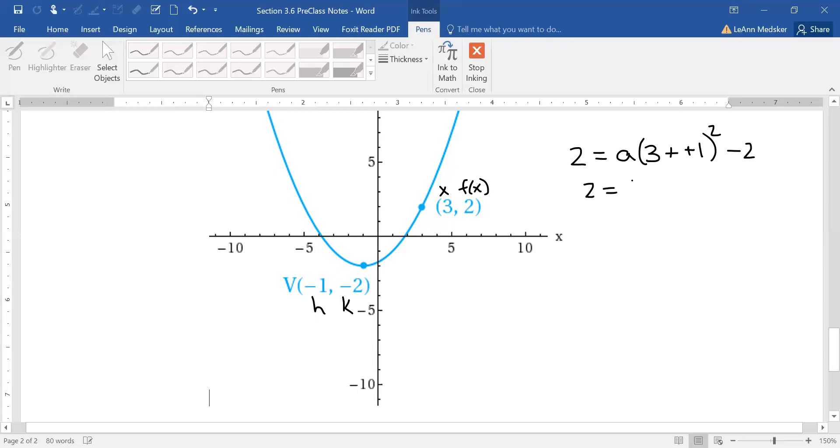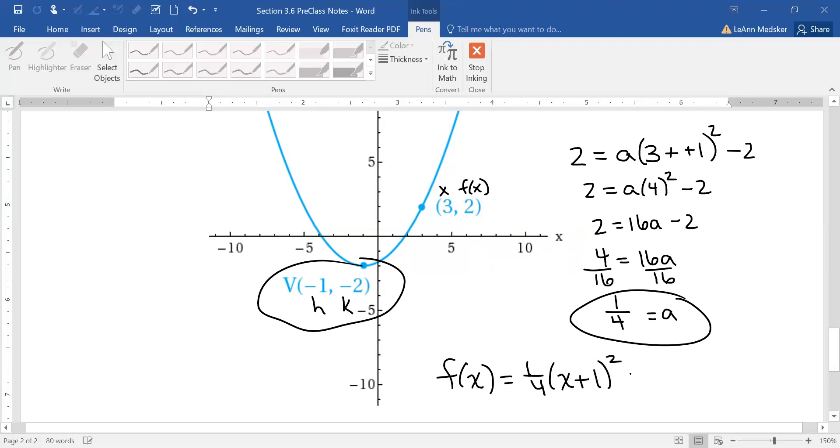So this is 2 equals a times (4)² minus 2, which is 16a - 2. Add the 2 over, we get 4, and divide by 16. Make sure you divide by the number connected to a. So this reduces to one-fourth. So I have my h and my k, I have my a, so I have my final equation. So this is (1/4)(x + 1)². And then k is exactly what you see, so minus 2. So that is the answer. All right, that's it for this pre-video.